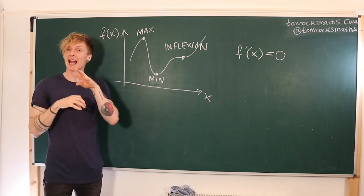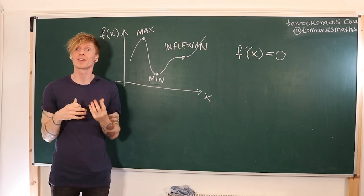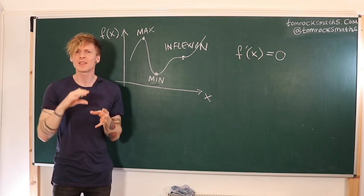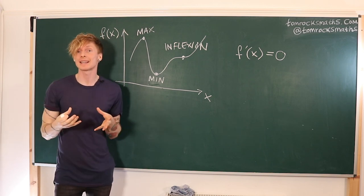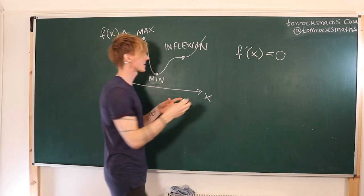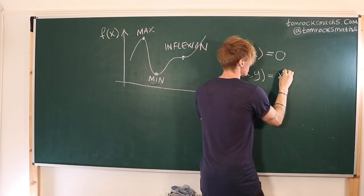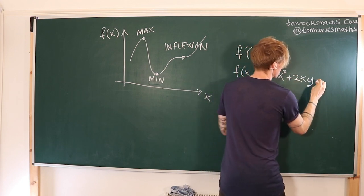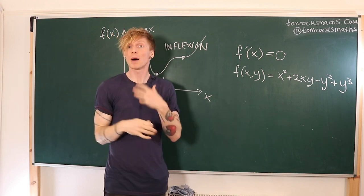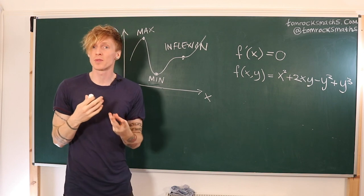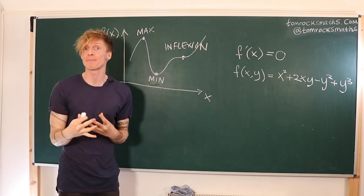So this means we actually need to calculate the partial derivatives and set both of them to be zero. Don't worry if you're not familiar with partial differentiation — the key idea is to treat everything else as a constant except the variable that you are differentiating with respect to. So taking the example of the surface we were just looking at, f(x, y) equals x squared plus 2xy minus y squared plus y cubed. We want to set both the x partial derivative and the y partial derivative to be zero — this is our idea about what must happen at a critical point.